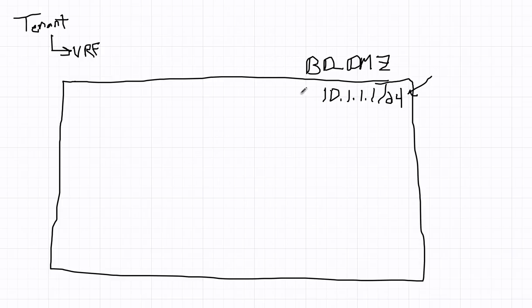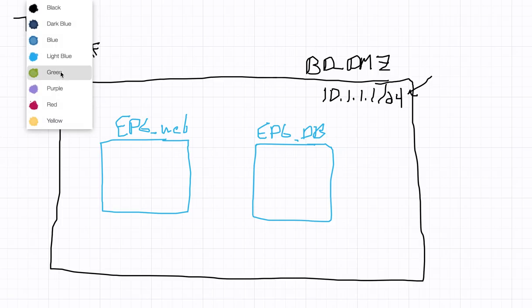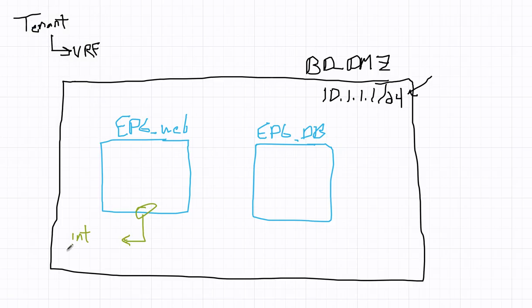So we've got our bridge domain here, and then inside bridge domains we'll have one or more what we call endpoint groups or EPGs. So this will be EPG web, maybe, and this will be EPG database. So what is an EPG? An EPG is a grouping of servers that are related to each other for policy—for access policy, connectivity policy, etc. To the outside world, they are a combination of interface and VLAN, or an interface and encapsulation. This one is also a combination of interface and encapsulation. We can actually have overlapping encapsulations depending on the configuration.